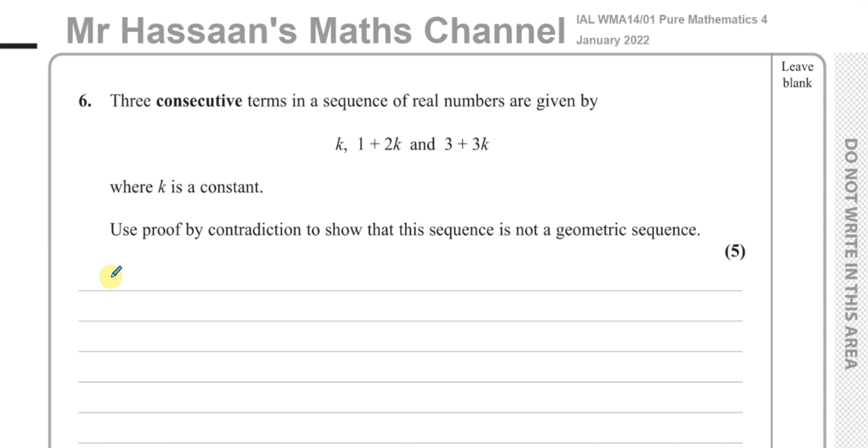When you're doing proof by contradiction, you have to start off by assuming the opposite, basically. So you want to assume that it is a geometric sequence. So you start off by saying, let's assume that the terms are in geometric sequence. That's the first thing you have to assume.